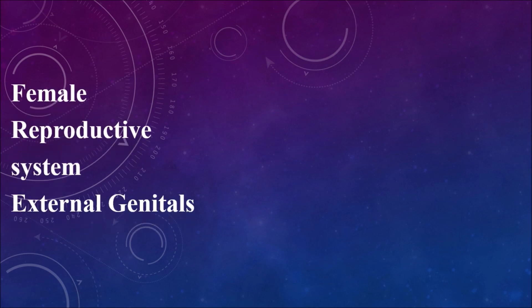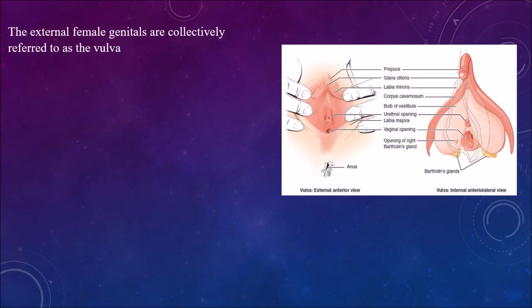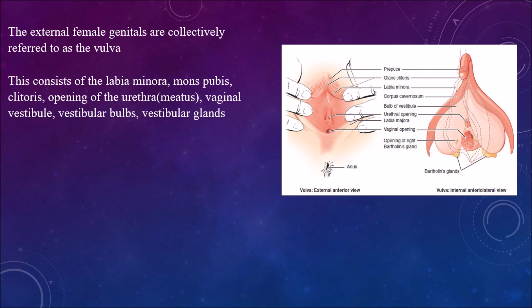Good morning. Today's session covers the female reproductive system. I have divided it into two parts: external genitals and internal genitals. In today's session we will go with external genitals — what they are, where they are, and what their functions are. The external female genitals are collectively referred to as the vulva.